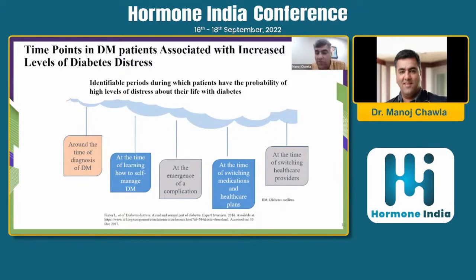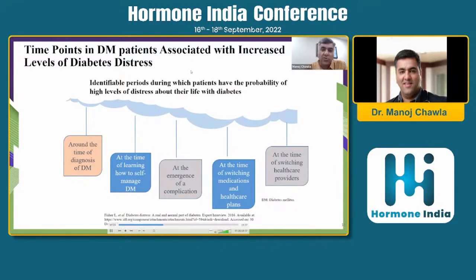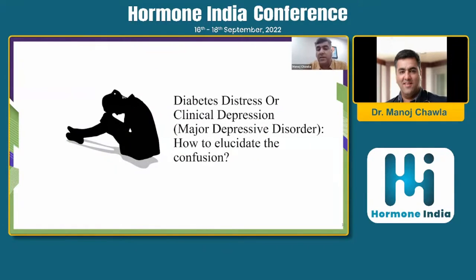Whenever there is a new complication onset, it adds to distress — telling a patient about a rise in creatinine, microalbuminuria, or leakage in the eye will cause distress. Also, when switching patients' medications within the oral segment or adding insulin, you need to give special attention to that. When patients move from one doctor to another, it is stressful for them too — patients may even show elevated blood pressure on arrival due to white coat hypertension from the anxiety of seeing a new doctor.